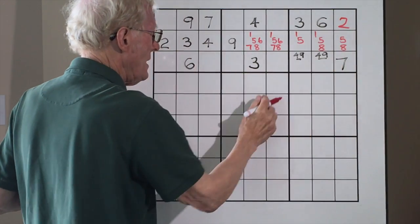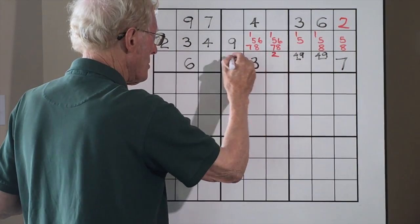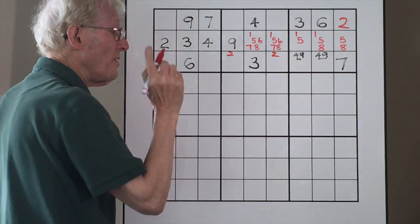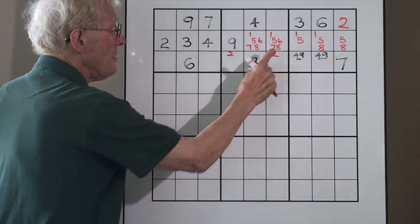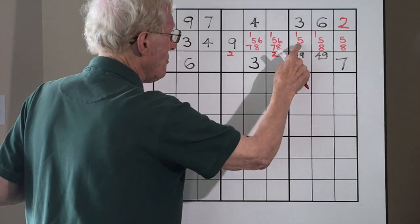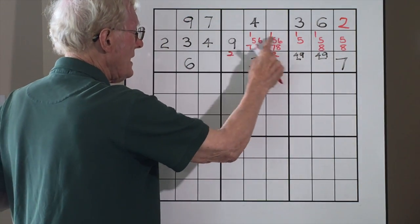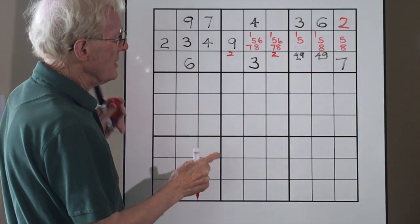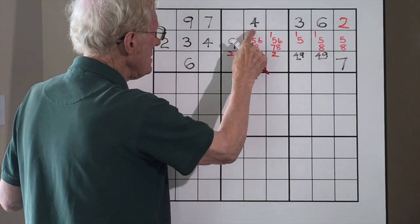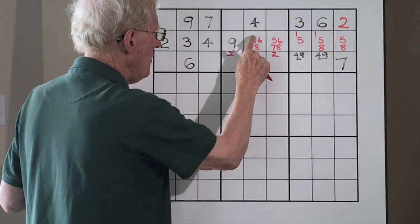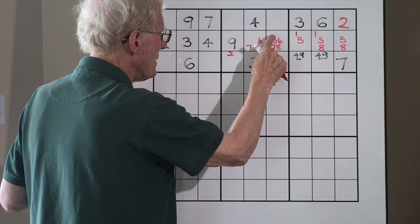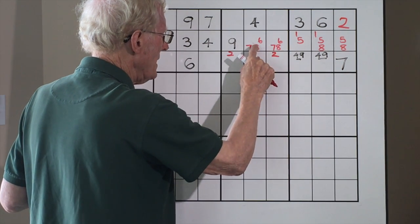Therefore, using TMB, these are possible twos. But more importantly, once you know that this is a one, five, eight, three by three, any one, five, eight along here can be removed. So let's remove the ones. Let's remove the fives. Let's remove the eights.